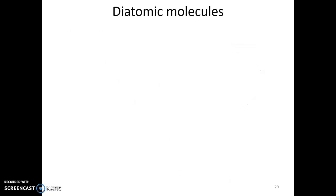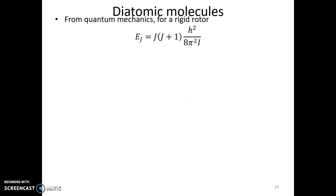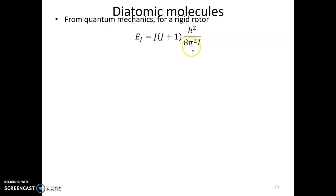From quantum mechanics, each rotational motion has discrete energy levels. The energy of a rotating system is given by Ej = j(j+1) · h²/(8π²I), where h is Planck's constant and I is the moment of inertia. This is often written as Ej = Bj(j+1), where B is the rotational constant.